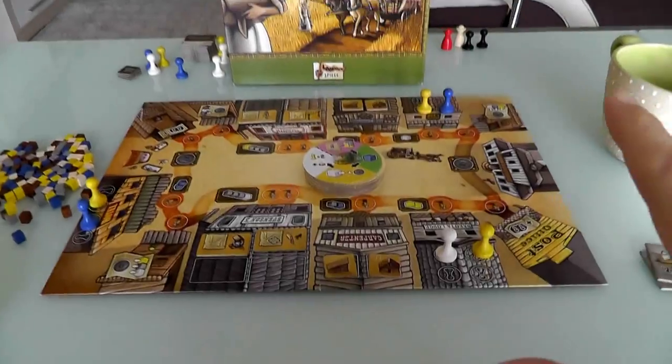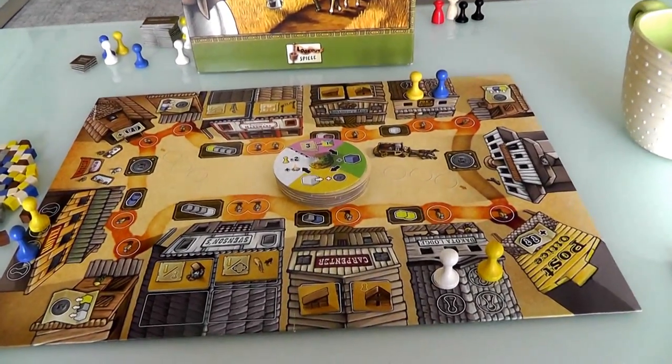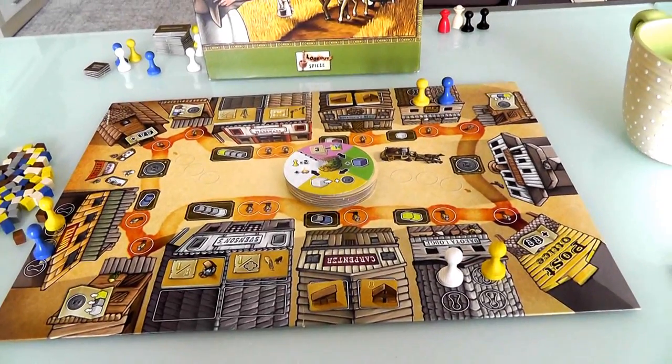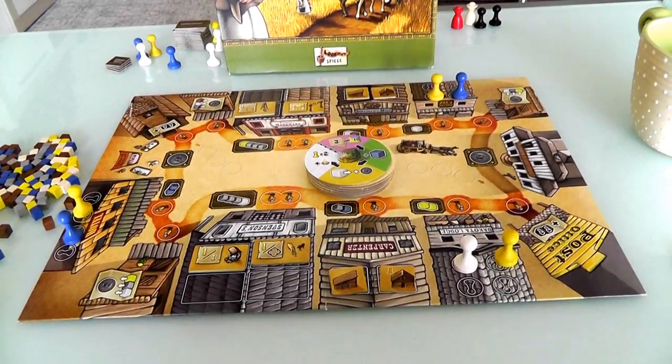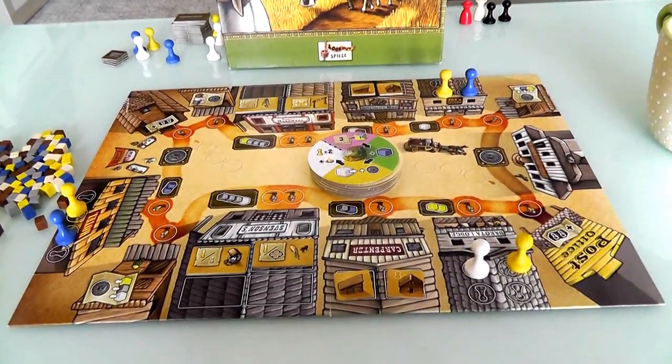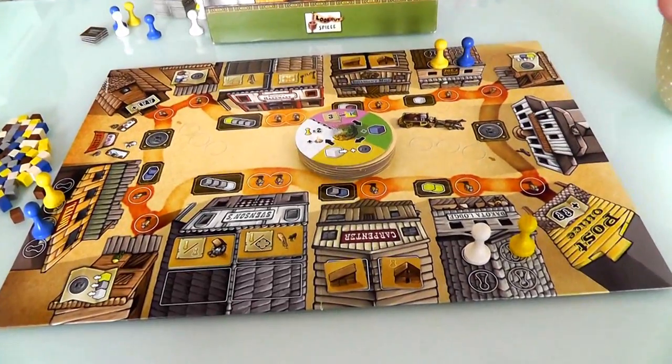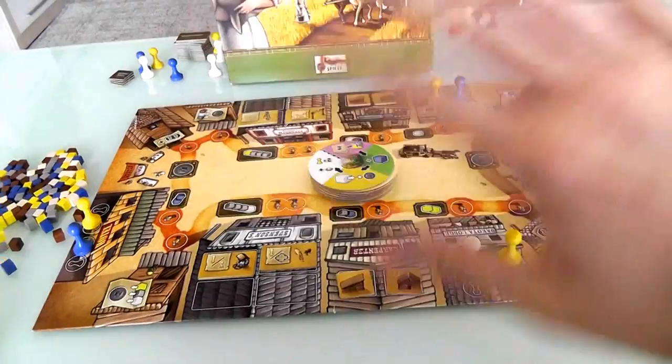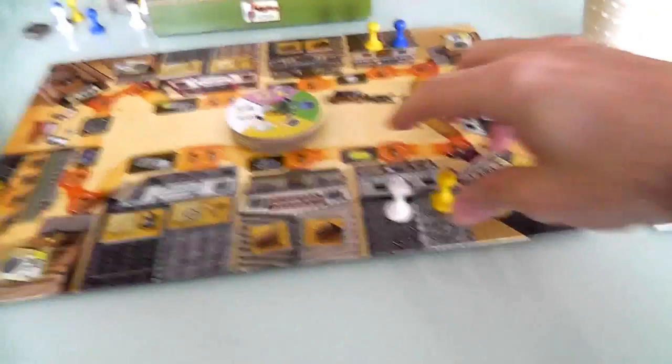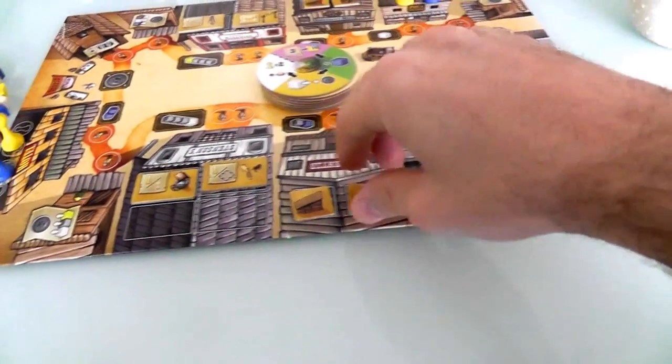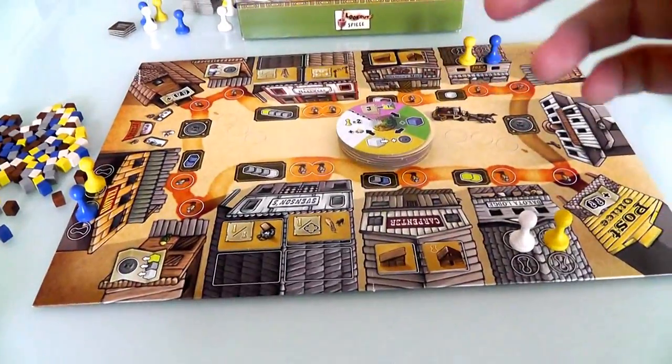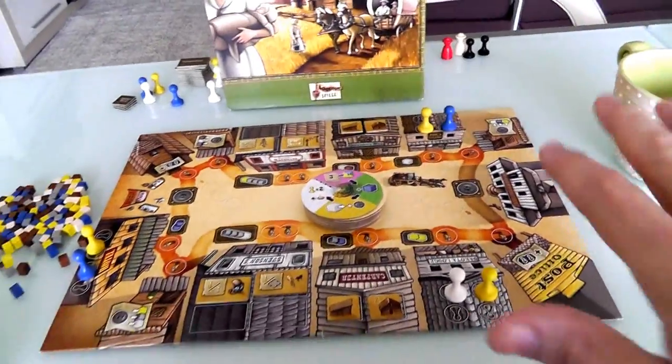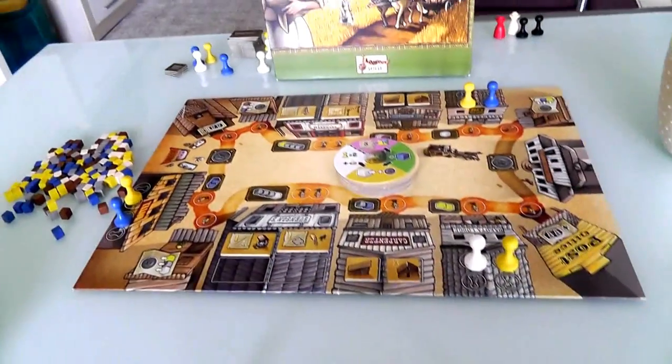Right off the bat, here's the board. You could really sum this game up as The Little House on the Prairie, the board game, or The Waltons, the board game. We are in the American Pioneer West, and you can see there's this local town where there's lodges and hotels and saloons, and you can do all kinds of stuff here in the town.